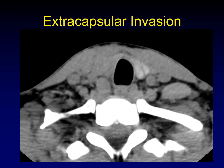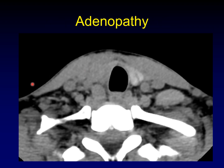Here's another example of extracapsular invasion showing the loss of fat planes all the way around the thyroid mass. Shifting to talk about adenopathy — there is actually a central compartment lymph node right behind the thyroid gland. It's a discrete mass. When I say central compartment, I mean it's between the medial edges of the common carotid arteries. So that's central compartment adenopathy.